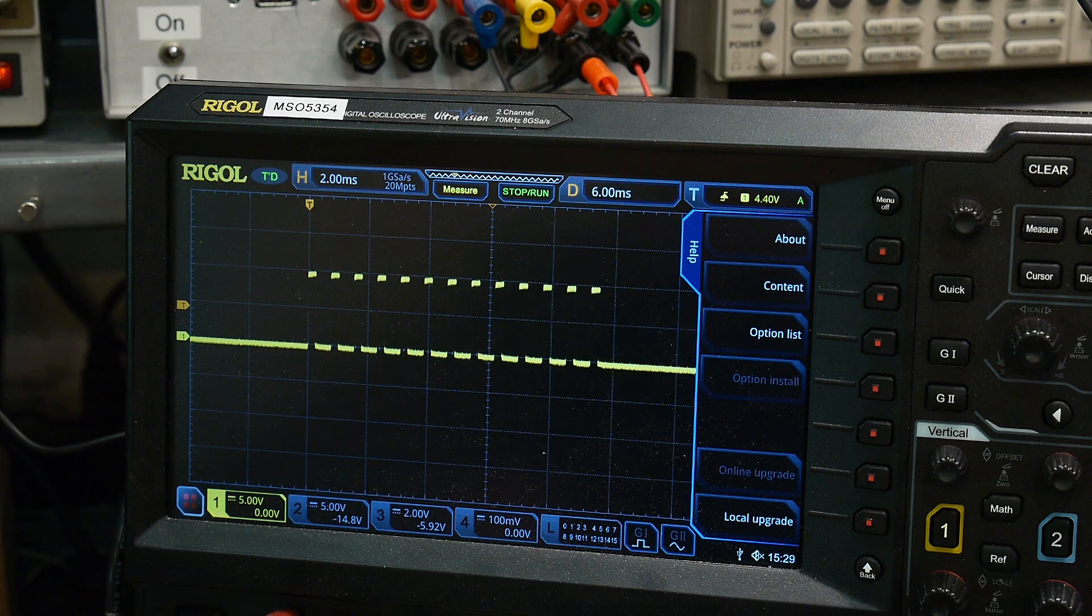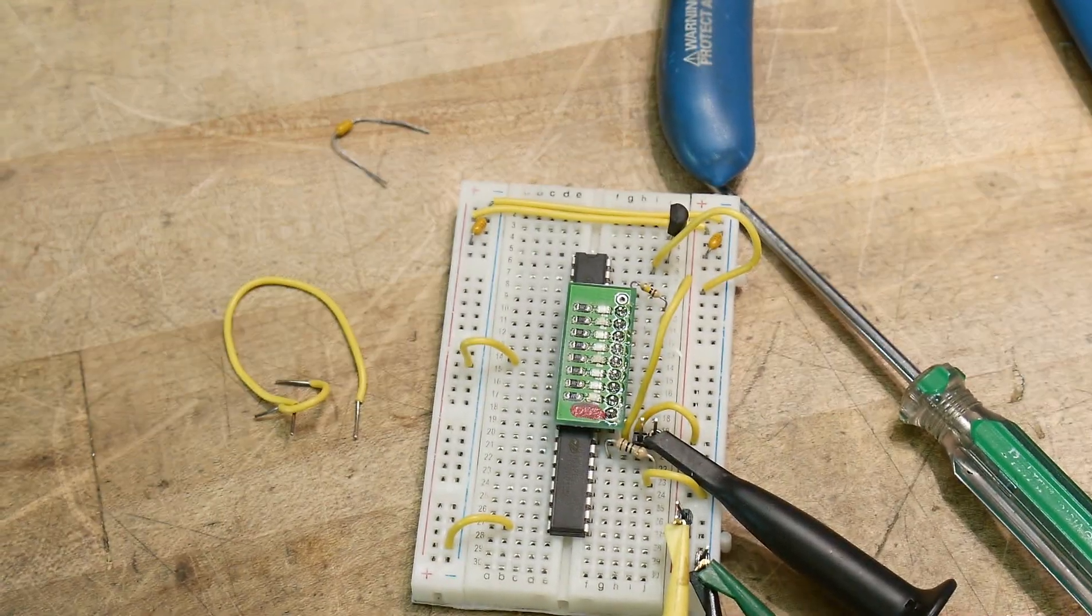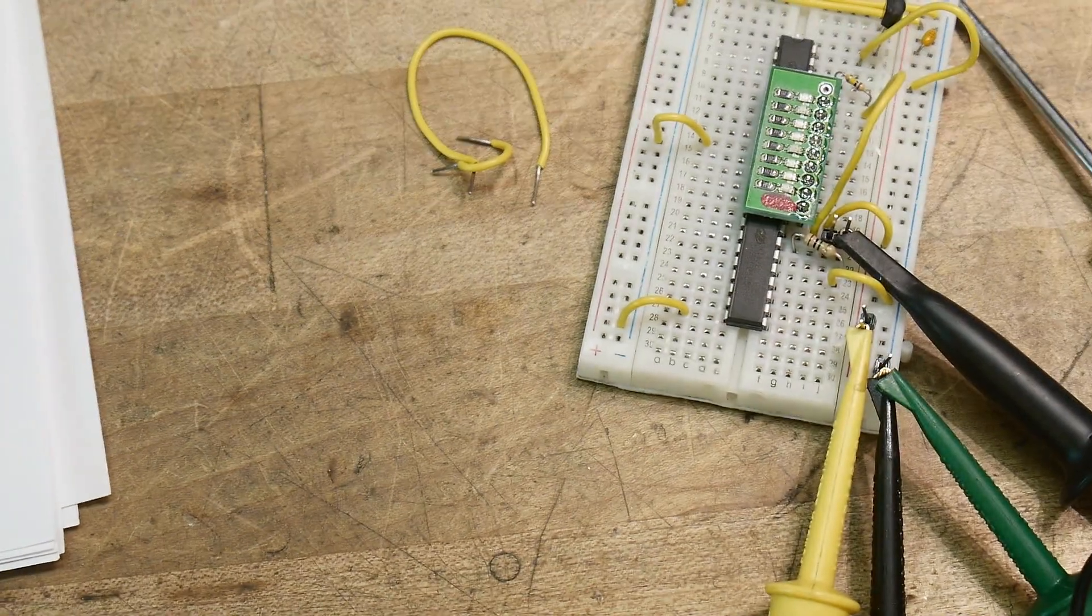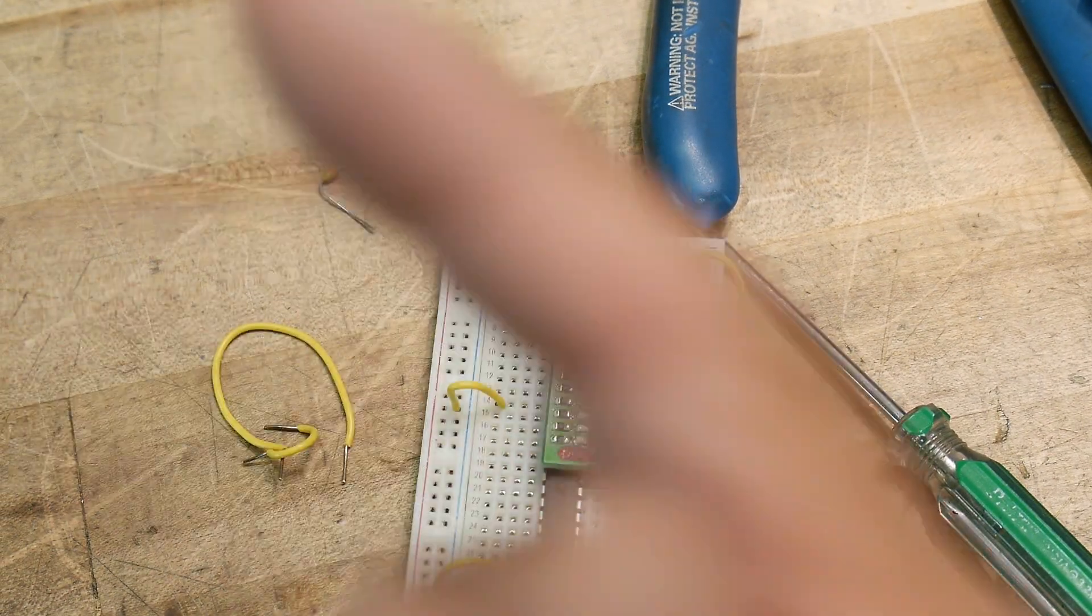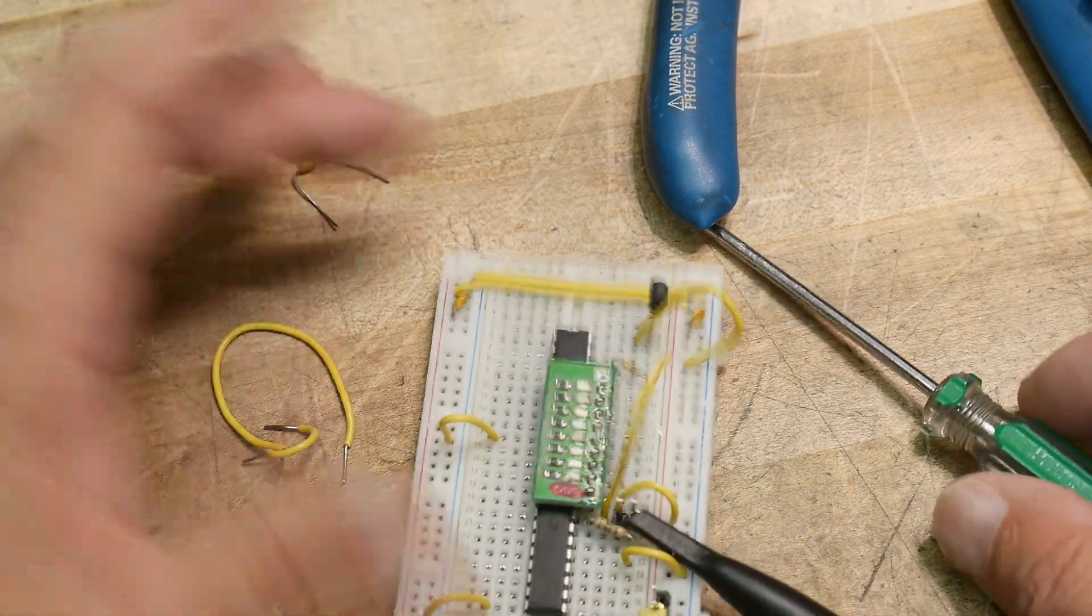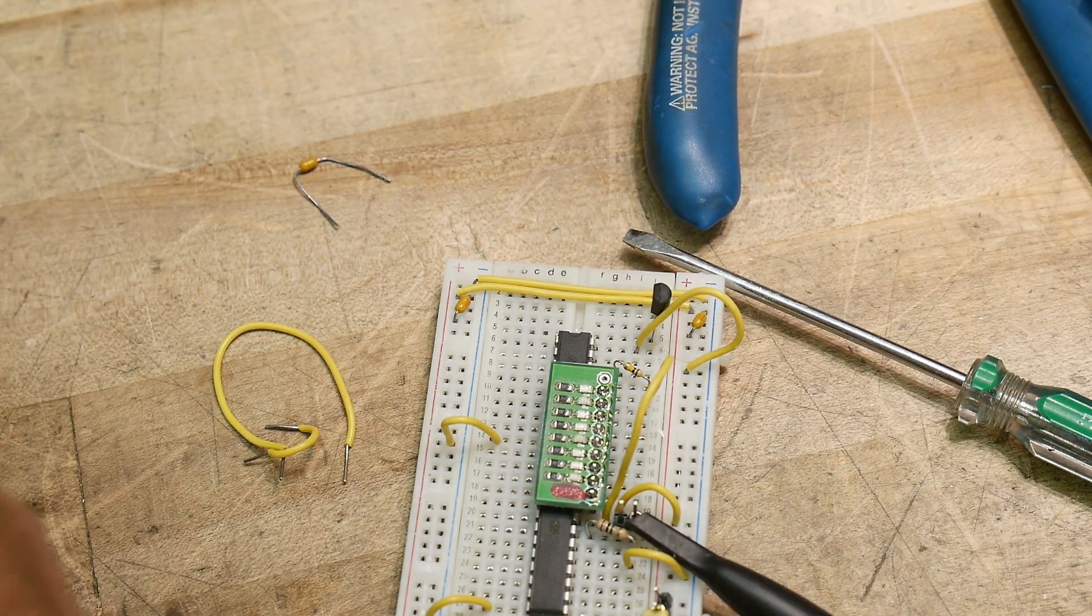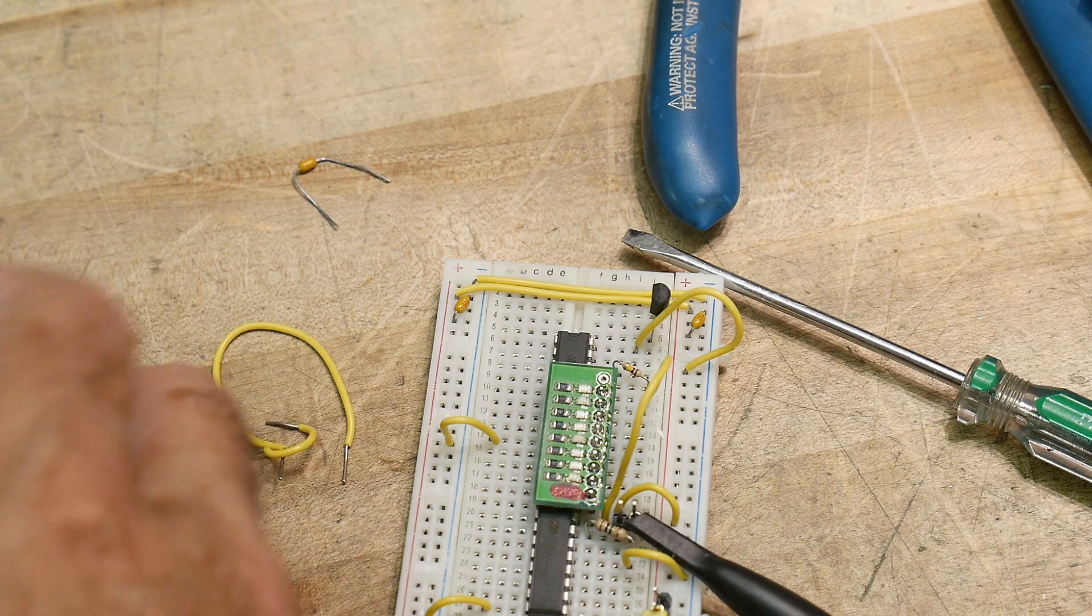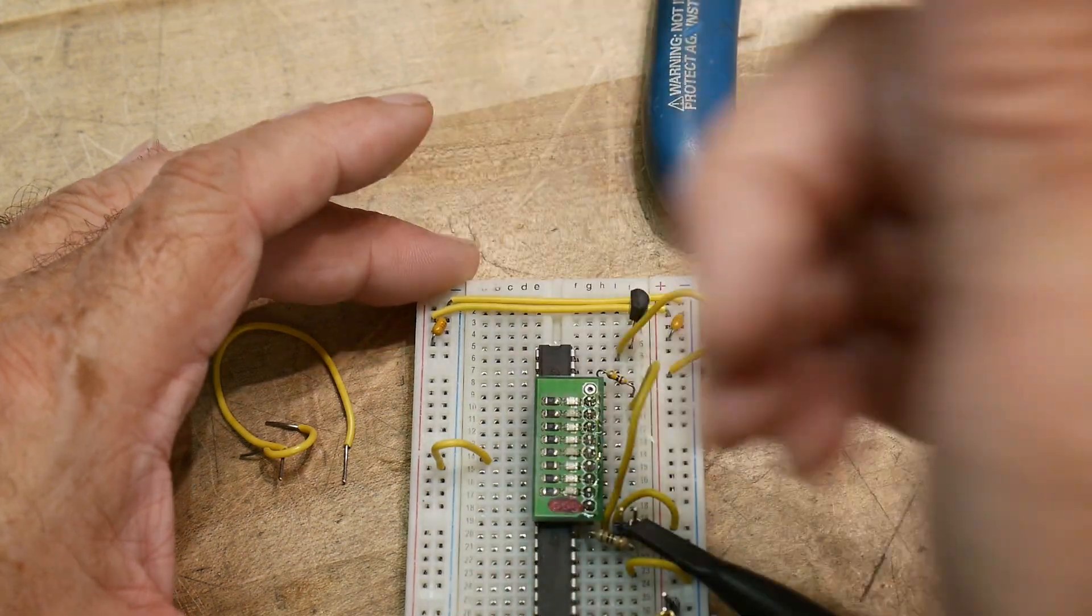One of the nice things is it's fairly intolerant to data speeds and fairly intolerant to the size of the signal. And let's see, what is the input range? I didn't look at that. I shouldn't say it's not intolerant to the size of the signal. It needs to be a one or a zero going into the chip.